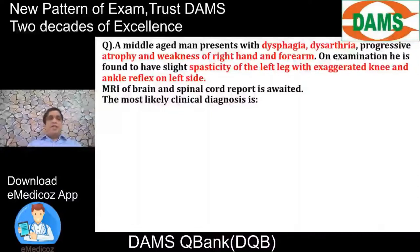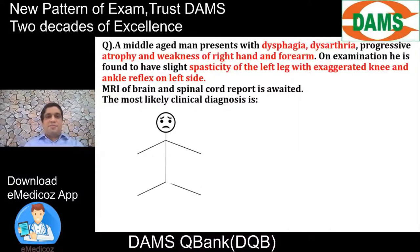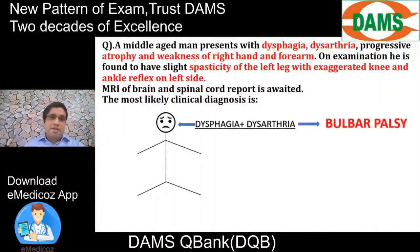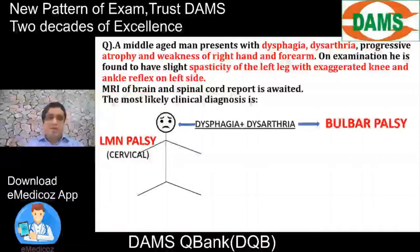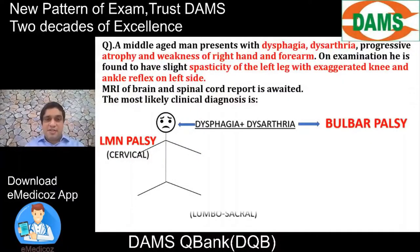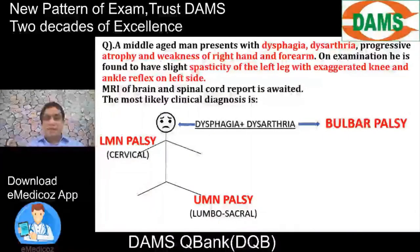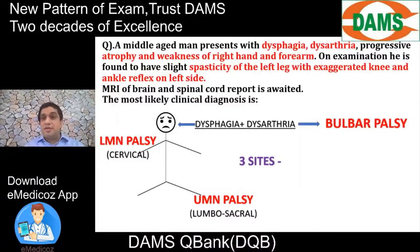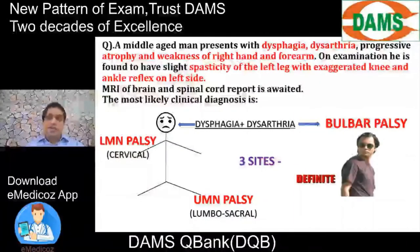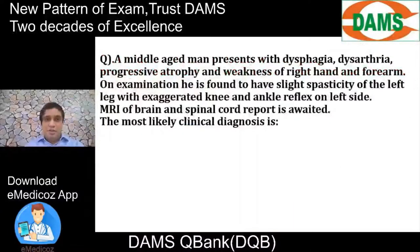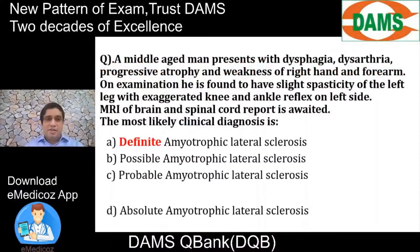Coming back to our question: the middle-aged man has dysphagia and dysarthria — that is bulbar palsy. There is atrophic weakness of the right hand and forearm — LMN paralysis — involving a cervical site. Spasticity of the left leg with exaggerated reflexes is UMN palsy — lumbosacral site. So bulbar, cervical, and lumbosacral — three sites are involved — making this a definite ALS.